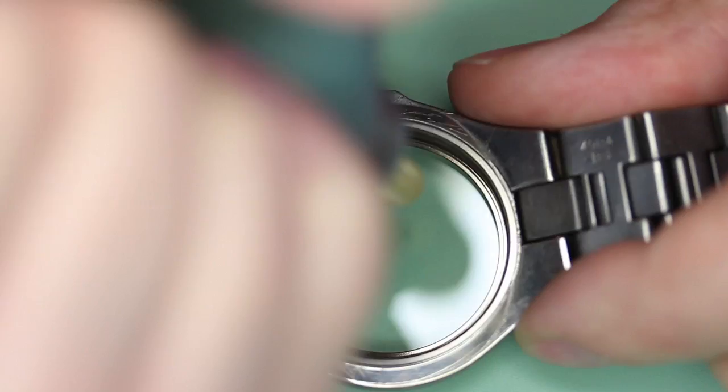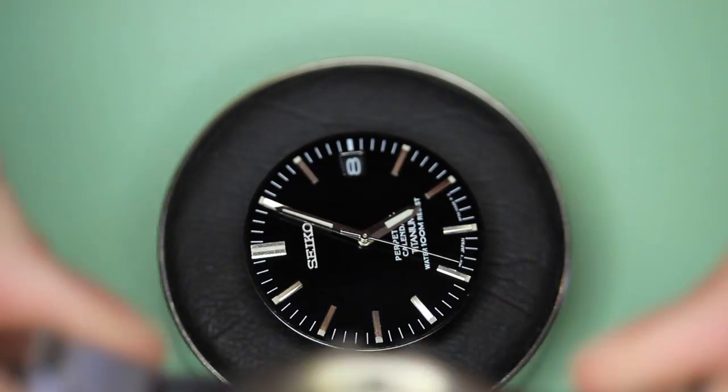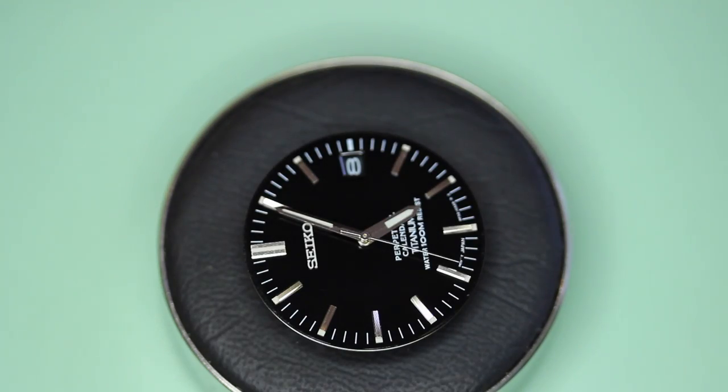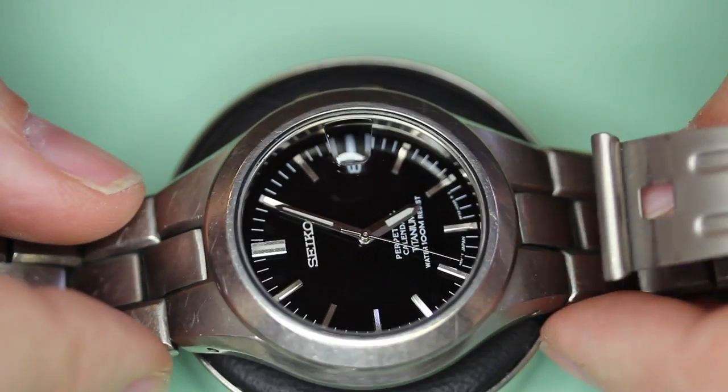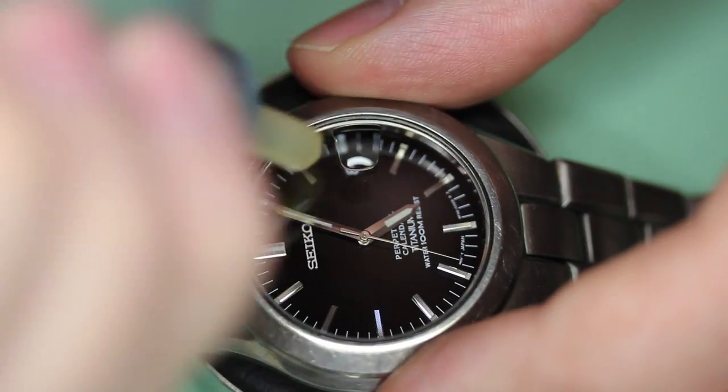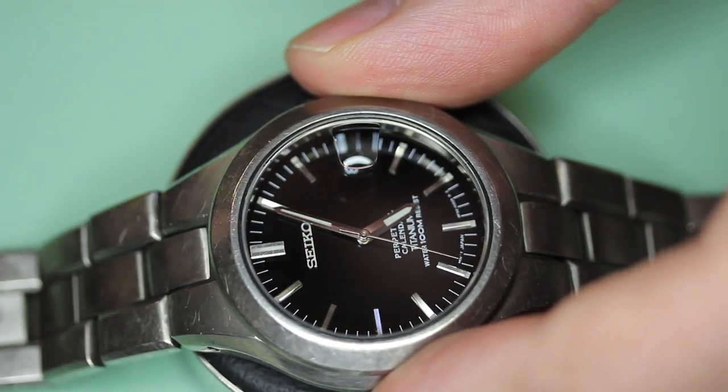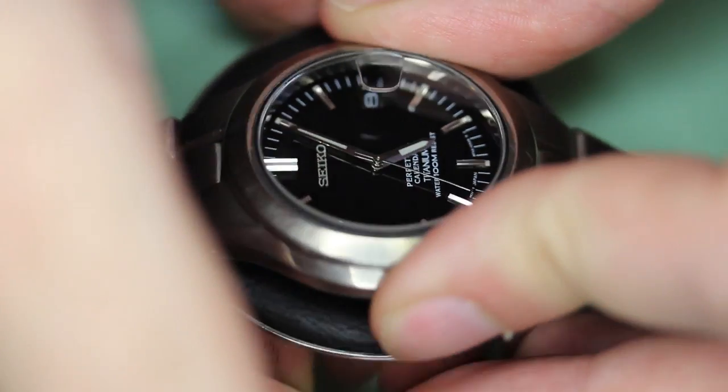Before placing the movement back into the watch case, I'm just using a dust blower to remove any particles of dust that may have gotten itself attached to the dial or the inside of the glass. Never blow using your breath because obviously the moisture in your breath might cause corrosion.